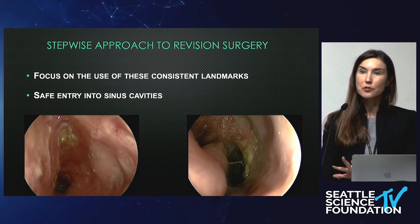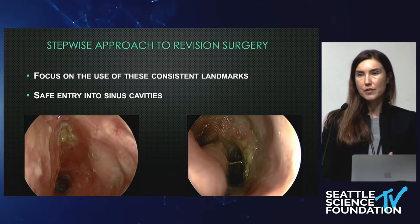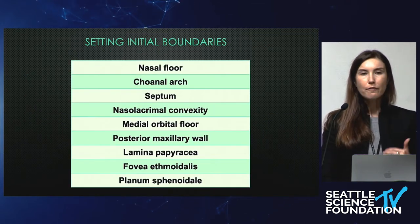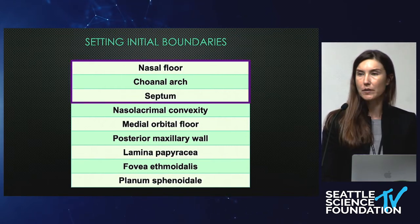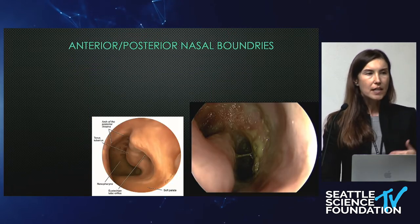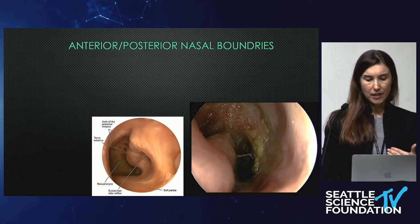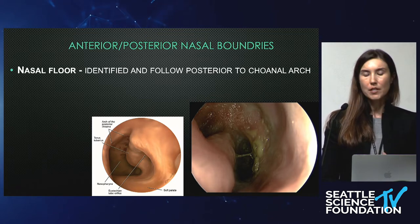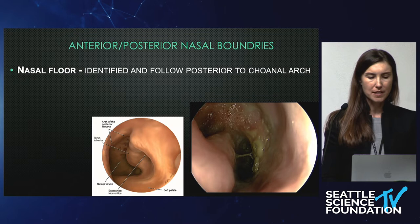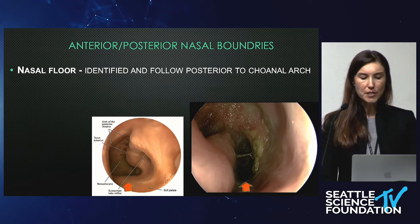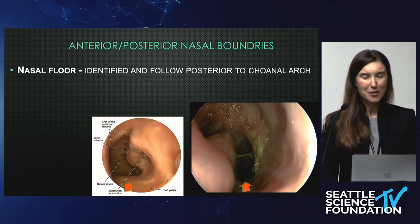I'm going to talk about a stepwise approach to surgery, focusing on the consistent use of these landmarks and safe entry into the nasal cavities. The first thing is to set your initial boundaries — the nasal floor, the coanal arch, and the septum. Setting that anterior-posterior nasal boundary is really important because it gives you the depth of field and helps you determine where everything is. So you want to identify that nasal floor and follow it posterior to the coanal arch.